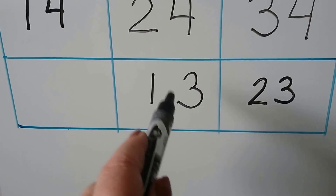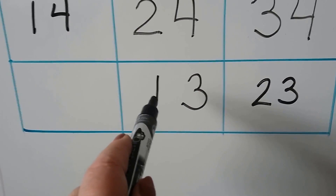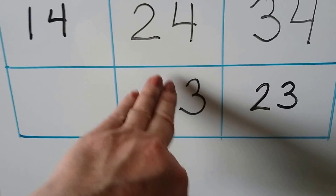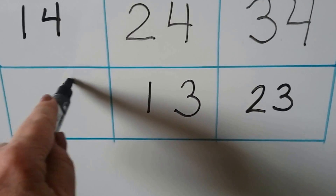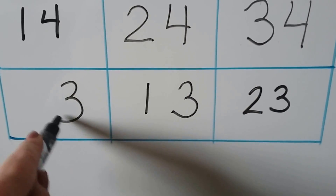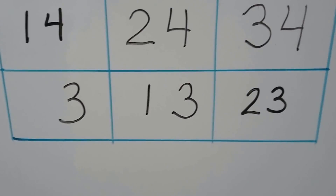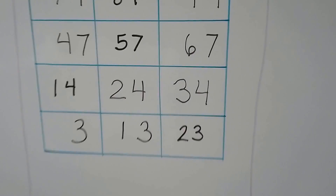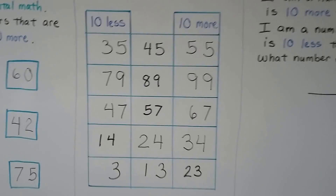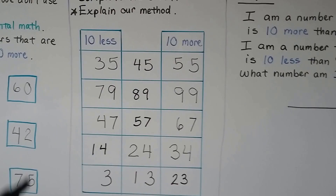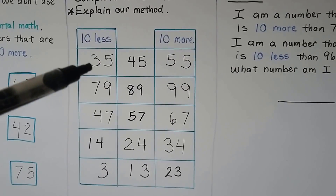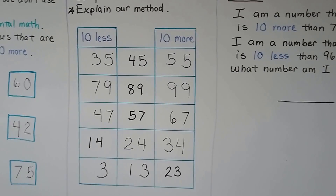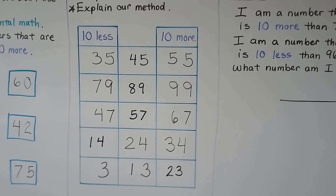For our last one, it's showing the 10 more and we need to go back. So we need to find 10 less than 23 — the ones stay the same, so it's going to be 3 ones, and we take away a 10 from the tens place — instead of 2 we have 1, so this one would be 13. 10 less than 13: we only have one 10, so if we took that one 10 away we would only have a 3. Our method was adding or taking away from the tens place while the ones stayed the same.